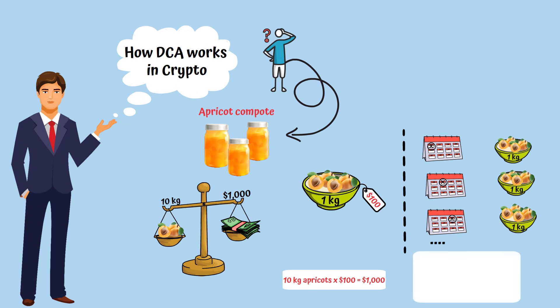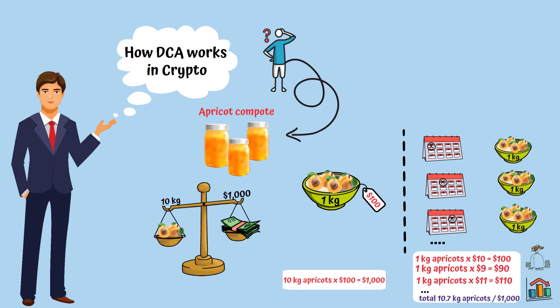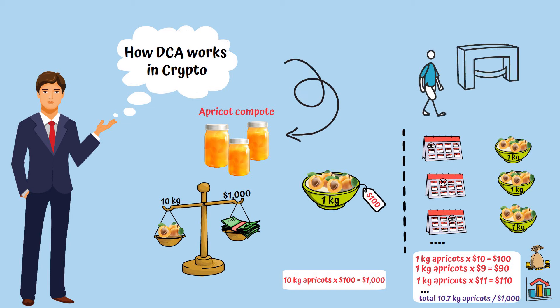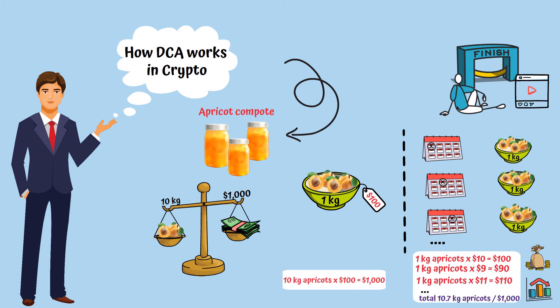But using the DCA strategy, you may end up with 10 pounds and 7 ounces for the same amount of money because of the change in price. This is basically what DCA is all about, so stay with me to the very end of this video, because I am going to explain what advantages this strategy has to offer.